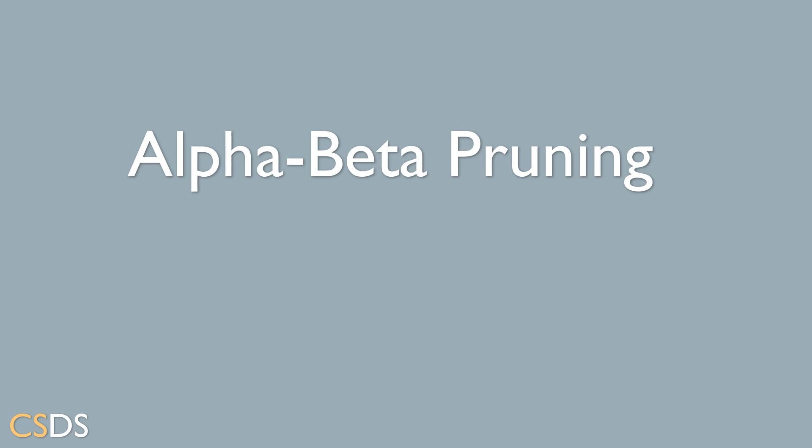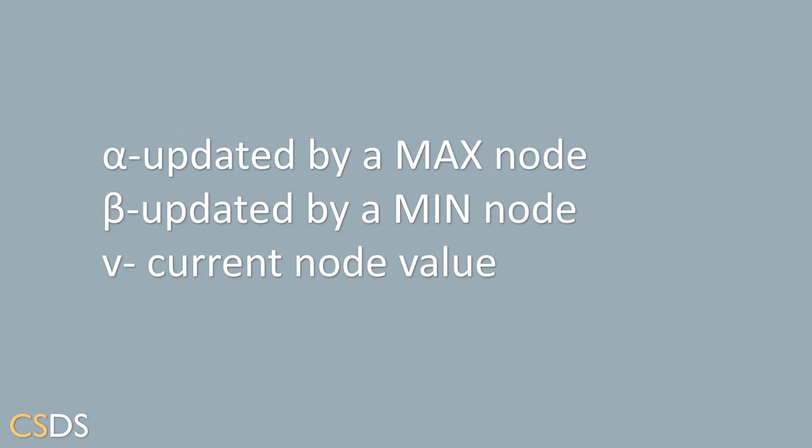Today we're going to learn how to perform alpha-beta pruning in artificial intelligence. First, let's introduce the variables we are going to use. We have alpha, which is updated by a max node; beta, which will be updated by a minimum node; and v, which is our current node value.